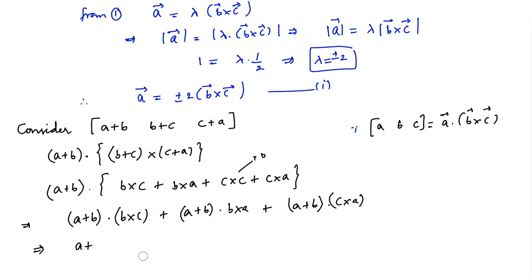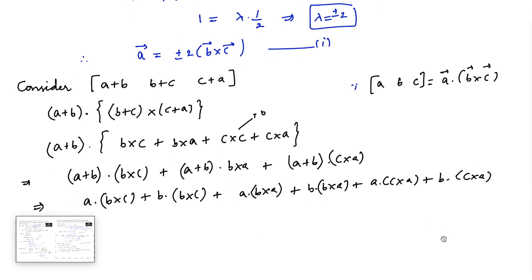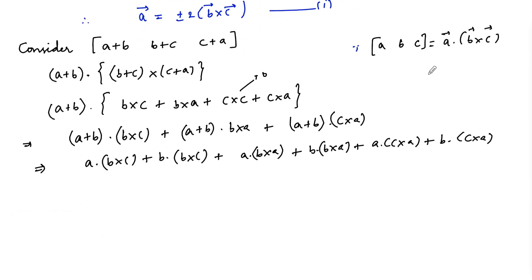Expanding fully: a·(b×c) + b·(b×c) + a·(b×a) + b·(b×a) + a·(c×a) + b·(c×a). In a scalar triple product, if any two vectors are equal, it equals zero.